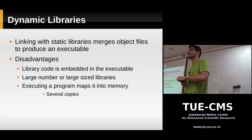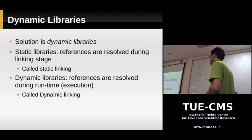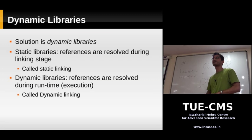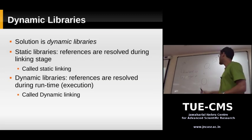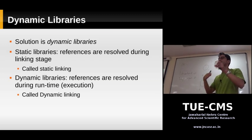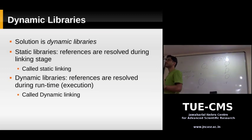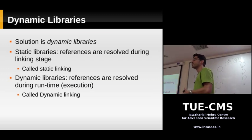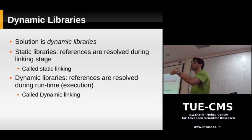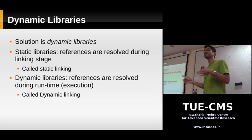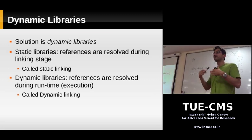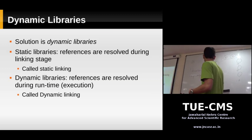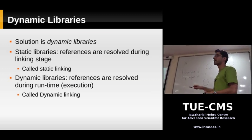The solution for both of these is to use dynamic libraries. In dynamic libraries, the resolving of dependencies is done not during compilation time — it's done during runtime. You have an executable file that might be calling functions it doesn't have a definition of, but the operating system, when you run that program, takes care of linking the program with the correct library at runtime. So in static linking is done during compilation time; in dynamic libraries it is done during runtime — references are resolved during runtime.